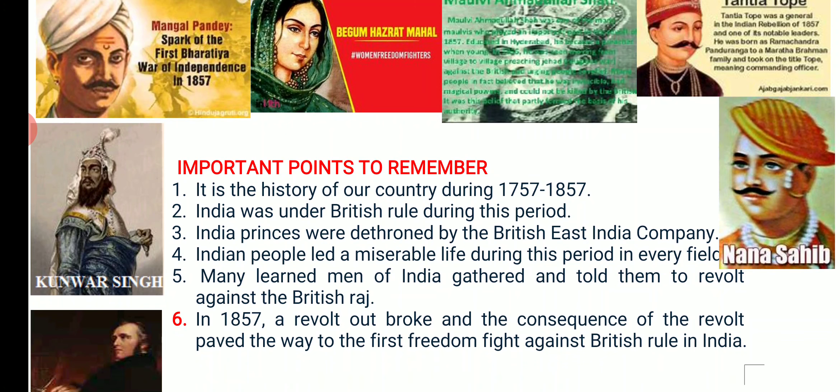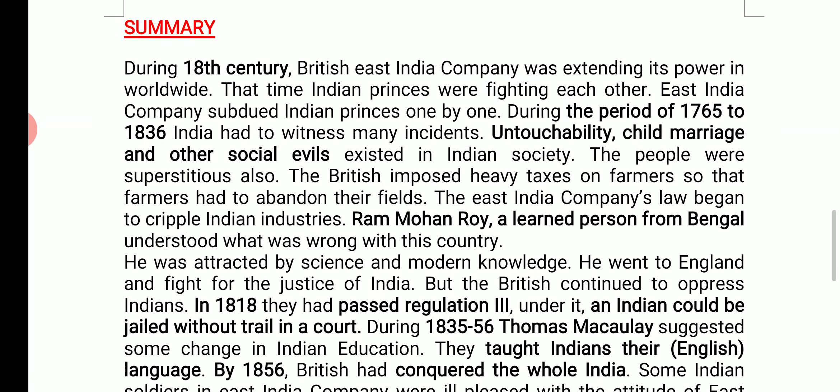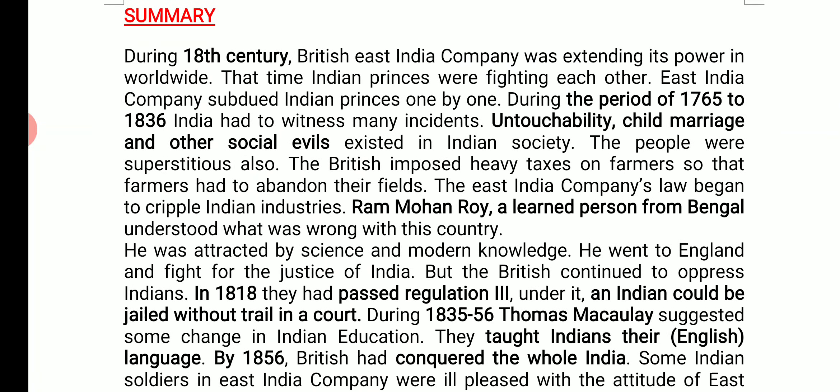Now, the key points to remember from this chapter: It covers the history of our country during 1757 to 1857, when India was under British rule. Indian princes were dethroned by the East India Company. Indian people led a miserable life during this period in every field. Many learned men of India urged the people to revolt against British Raj, and finally in 1857 a revolt broke out, paving the way to the first freedom fight against British rule in India.